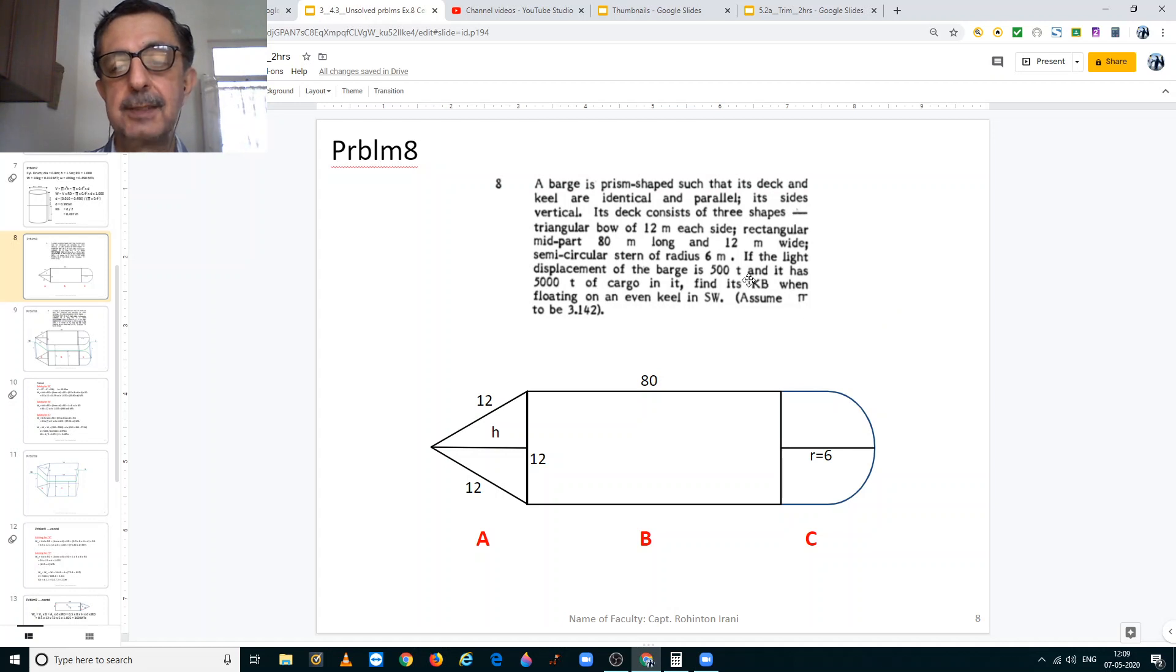We have to find its KB when floating on an even keel in salt water. KB is the height of the center of buoyancy from the keel. And you have to assume pi to be equal to 3.142.